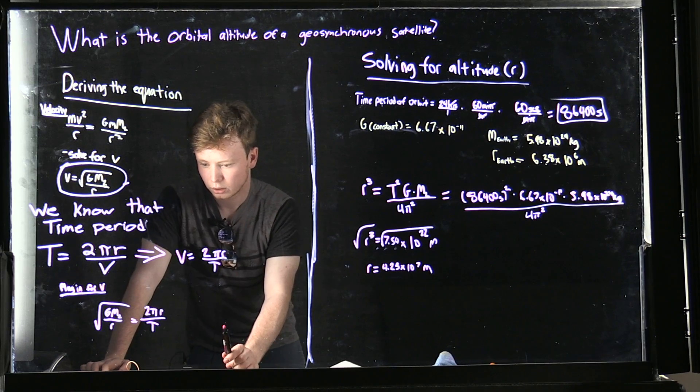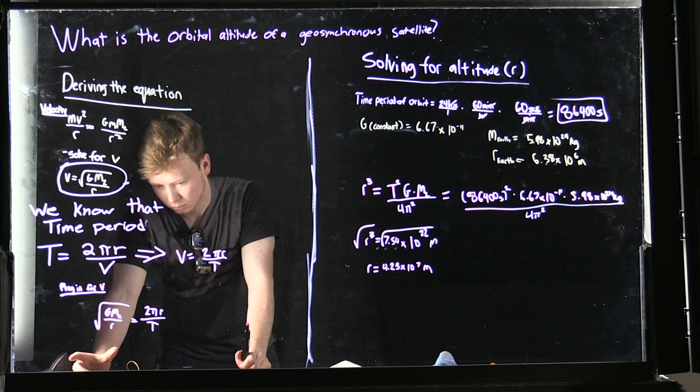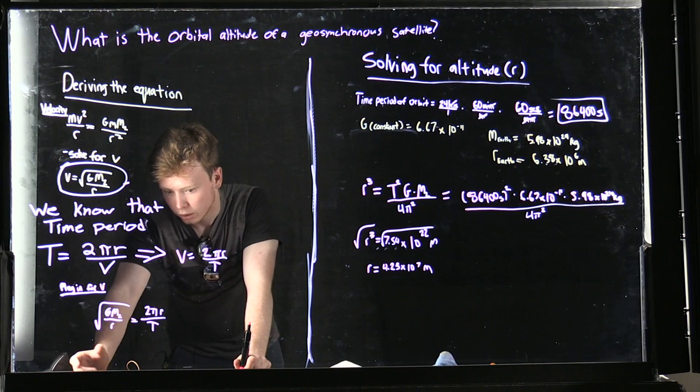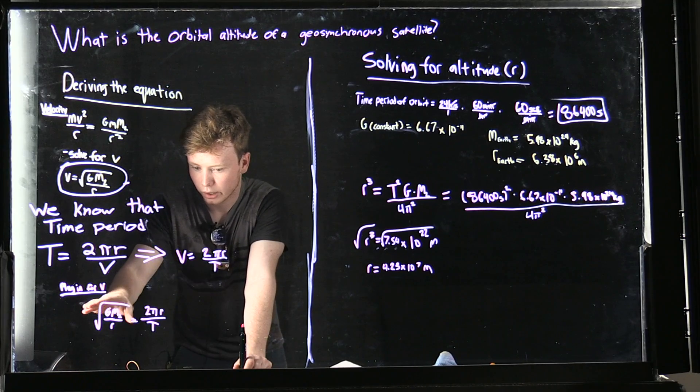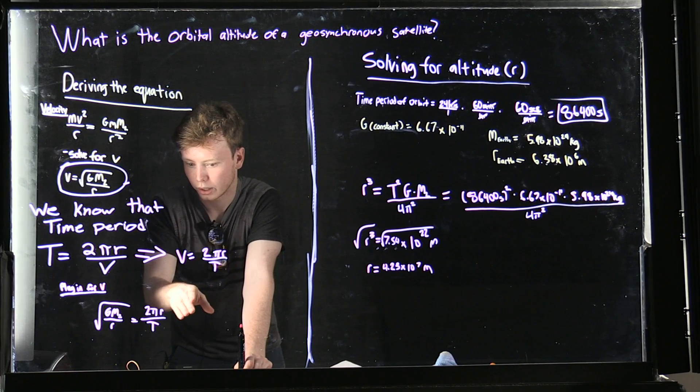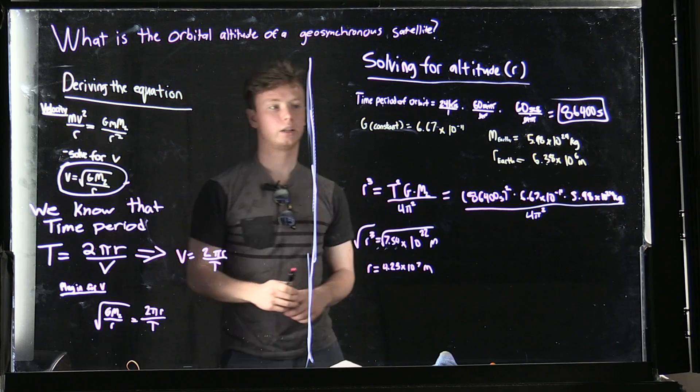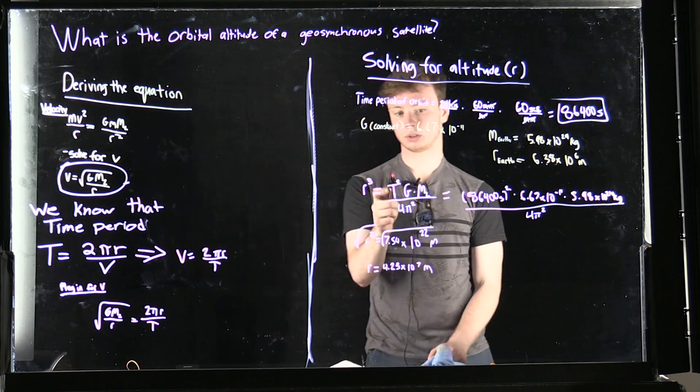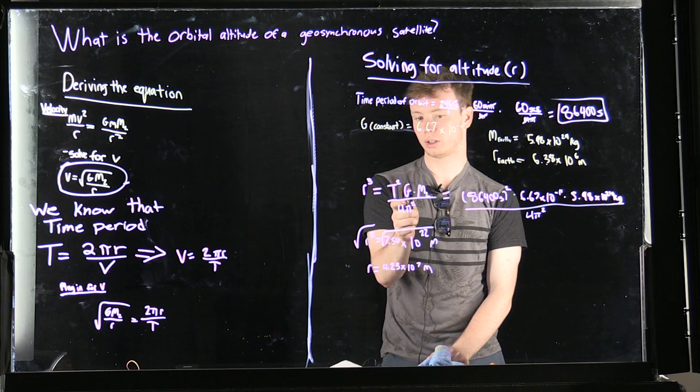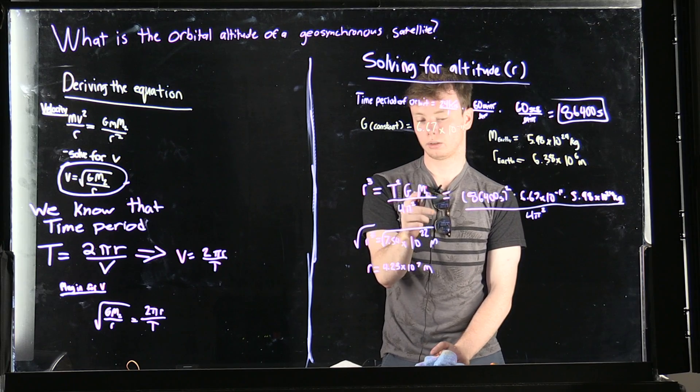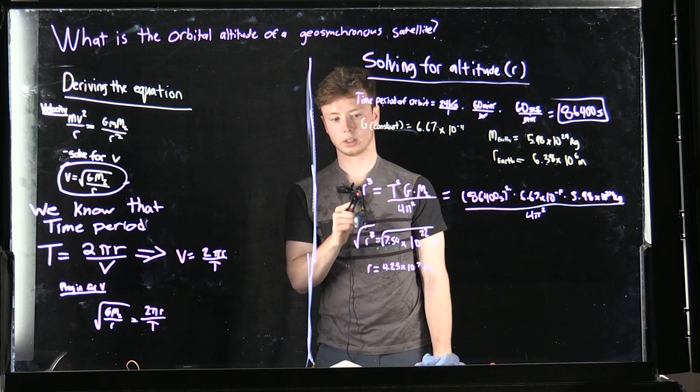So from that equation, you're going to square both sides. You're going to multiply T over to the left, R over to the right, and then you're going to divide by 2 squared π squared. You're going to end up with R³ equals T² times gravity constant times mass of Earth over 4π².